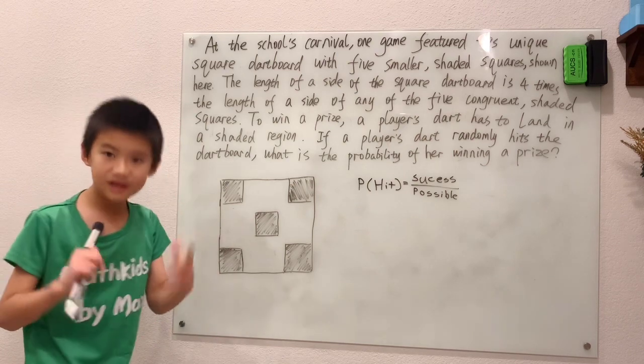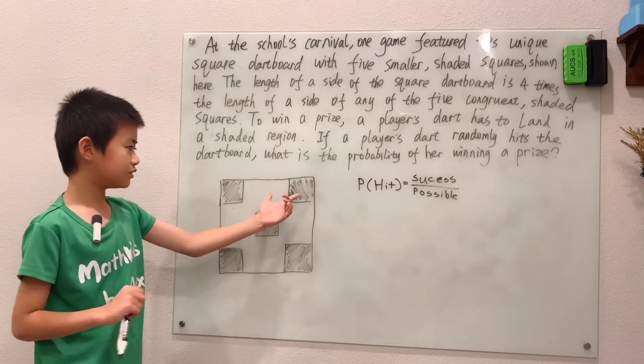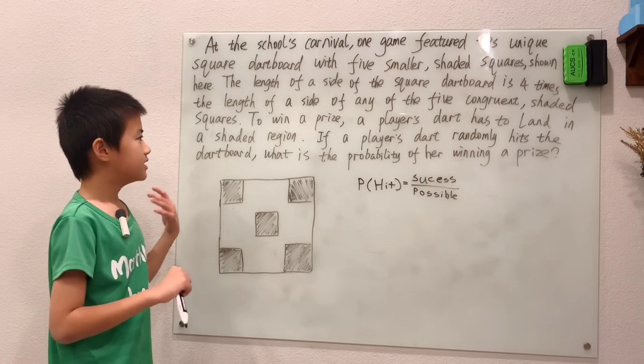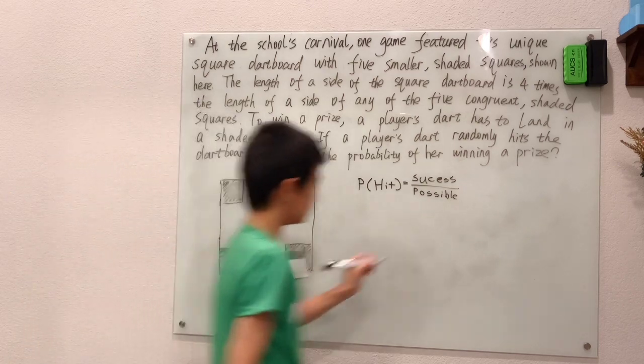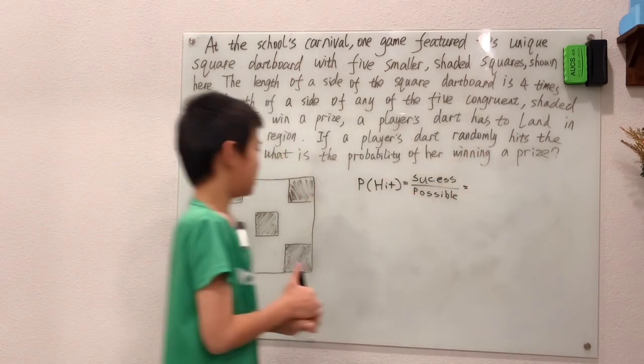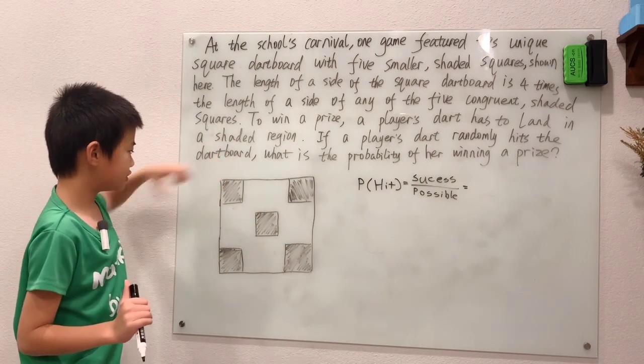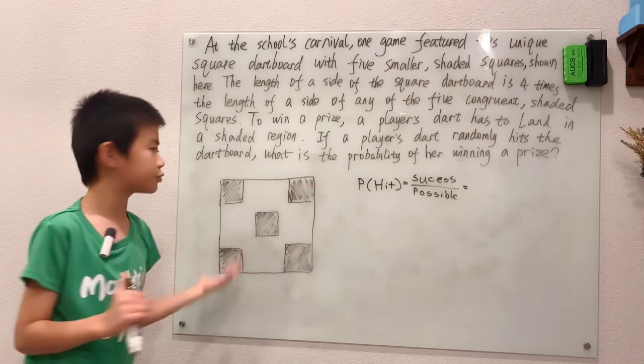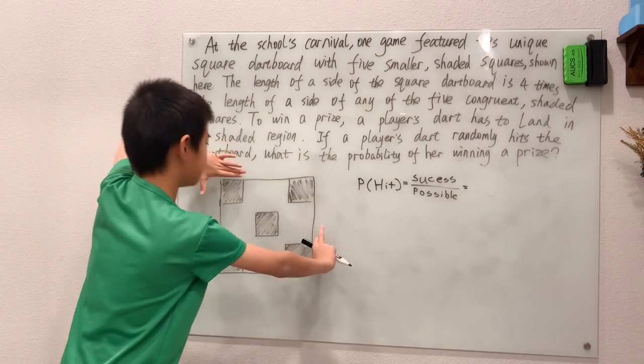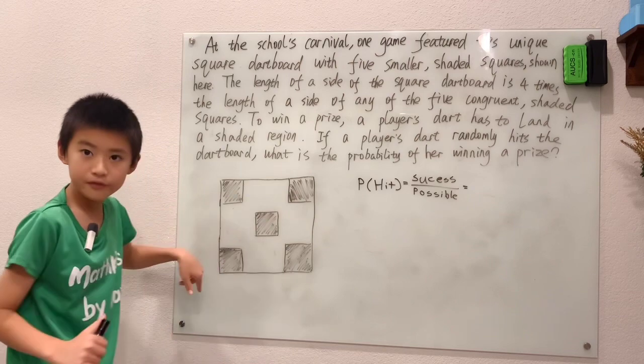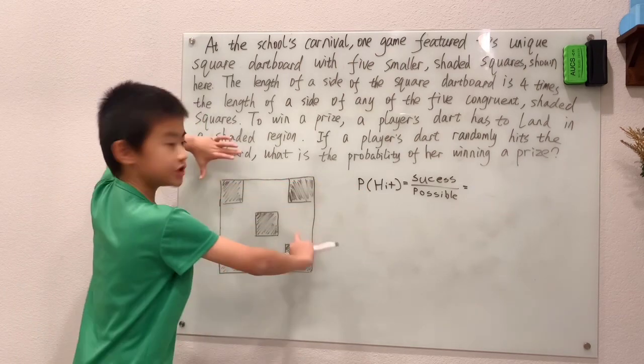So now we're not counting anymore, we're measuring. Which means we need to take the area of these five squares out of the area of this large square. Because the success is the five little squares, possible is just this big square.